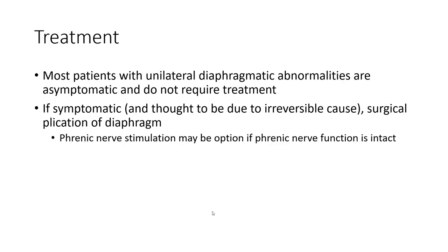Treatment: Most patients with unilateral diaphragmatic abnormality are asymptomatic and do not require treatment. If symptomatic, surgical plication of the phrenic nerve may be considered.